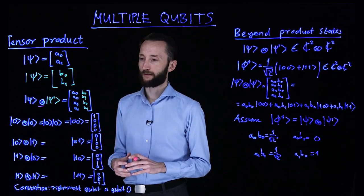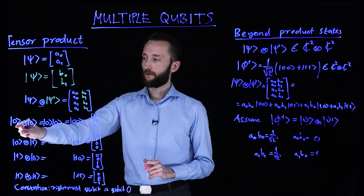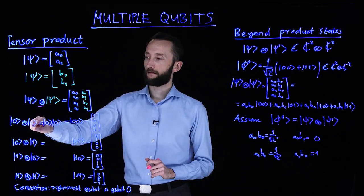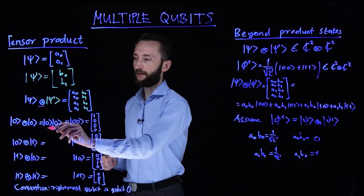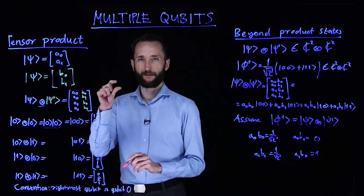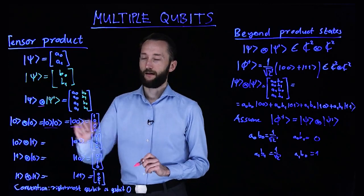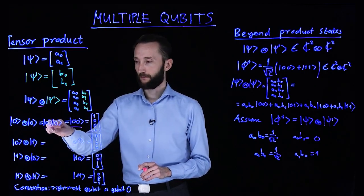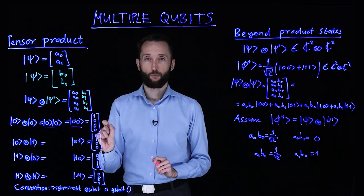And now we can create a basis in this space. So we can take our zero cat and take the tensor product with another zero cat, and the shorthand notation for this is just dropping the tensor product sign, and the even shorter notation is by dropping the two cats here and just contracting them into one.